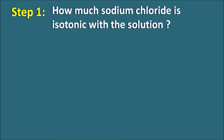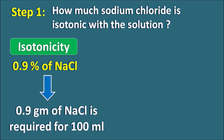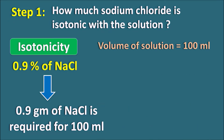Step 1 — how much Sodium Chloride is isotonic with the solution? We know that 0.9% Sodium Chloride is isotonic with blood, meaning 0.9 grams of Sodium Chloride is required for 100 ml. Since the volume of the solution in this example is 100 ml, there is no need for further calculation. The amount of Sodium Chloride required is 0.9 grams.